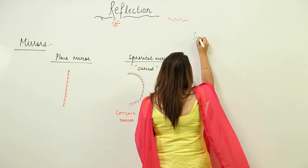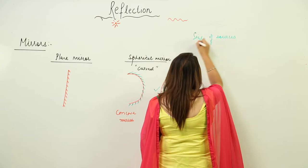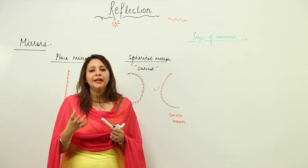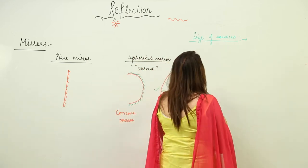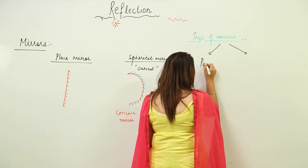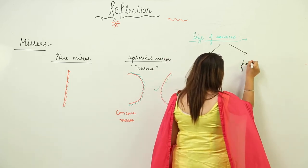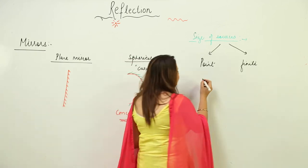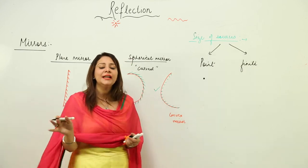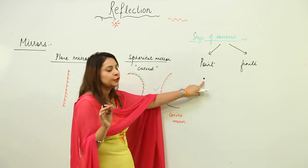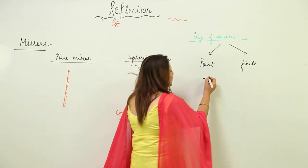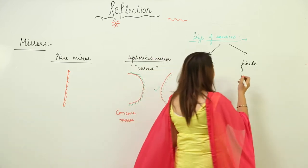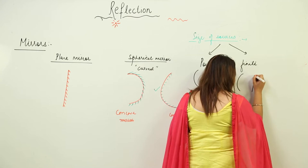Depending upon the size of sources — the source from which light is being emitted — we classify sources into two kinds. One is the point source and the other is the finite source. In a ray diagram, a point source is represented by a dot, and a finite source is denoted by an arrow.